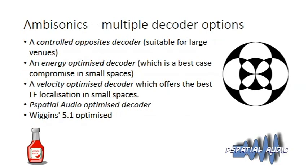Ambisonics is quite a complicated area, and we allow for various different types of decoding. For our Stereo UHJ signal we have a controlled opposites decoder, an energy-optimized decoder, a velocity-optimized decoder, our own spatial audio optimized decoder, and we also include the Wiggins 5.1 encoder algorithm.